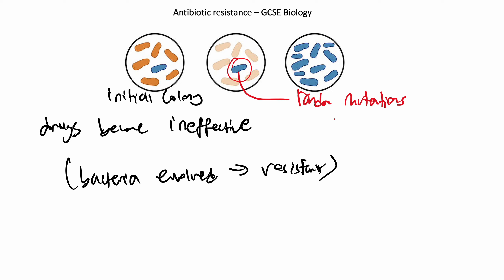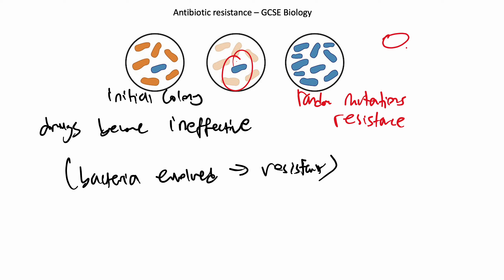It's basically just small changes in the DNA - a random mutation in one bacterium during cell division that gives it some resistance to antibiotics. Then the antibiotic is used on the colony and only this one is going to remain, because all of the rest don't have the resistance. All the other bacteria die except for the one with the mutation, which survives.